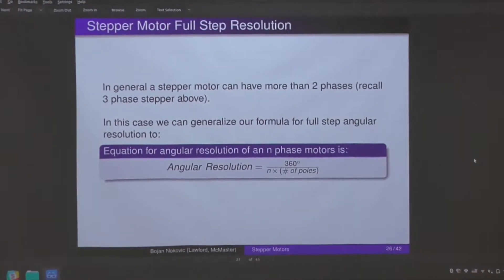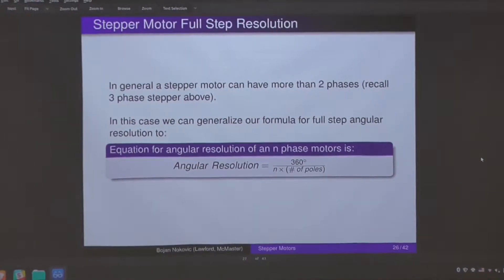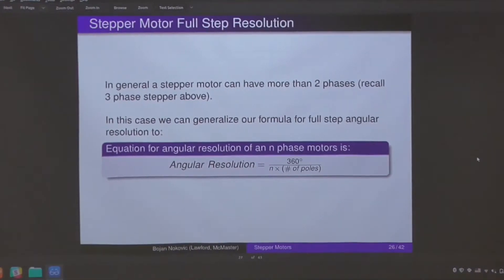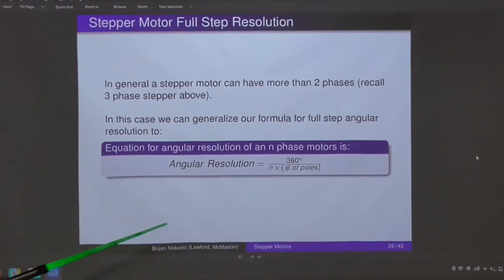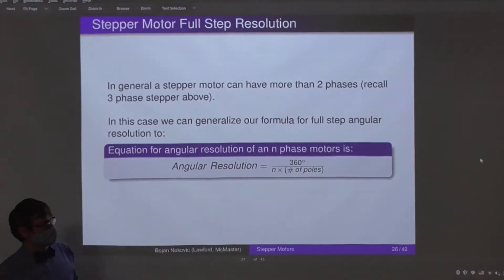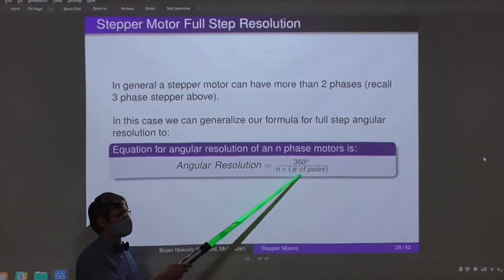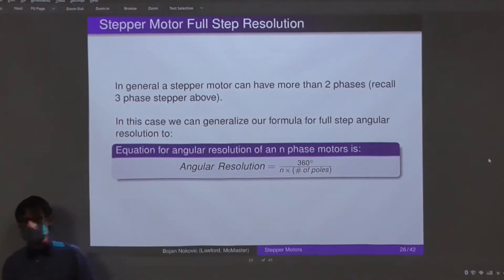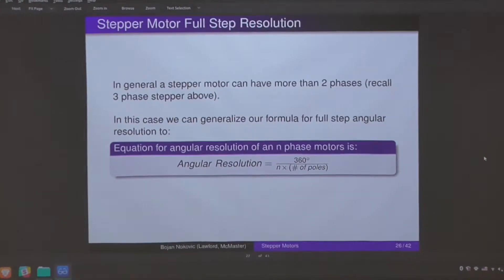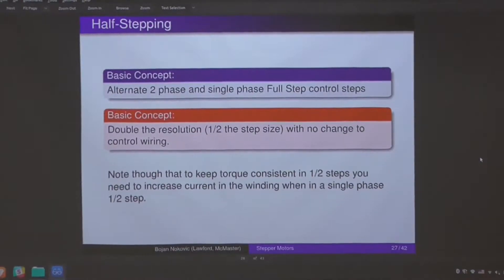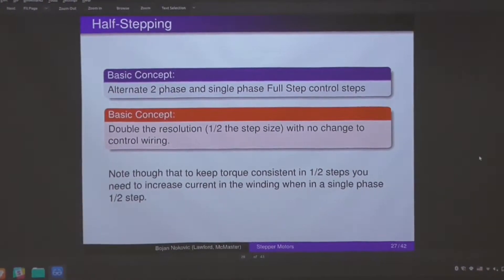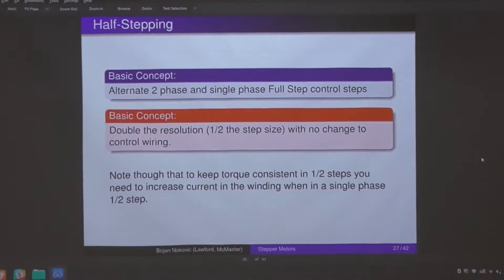In general, a stepper motor can have more than three phases. In this case, we generalize the formula to n, which is exactly what I just said. N times the number of poles, 360 divided by that, that's the resolution.